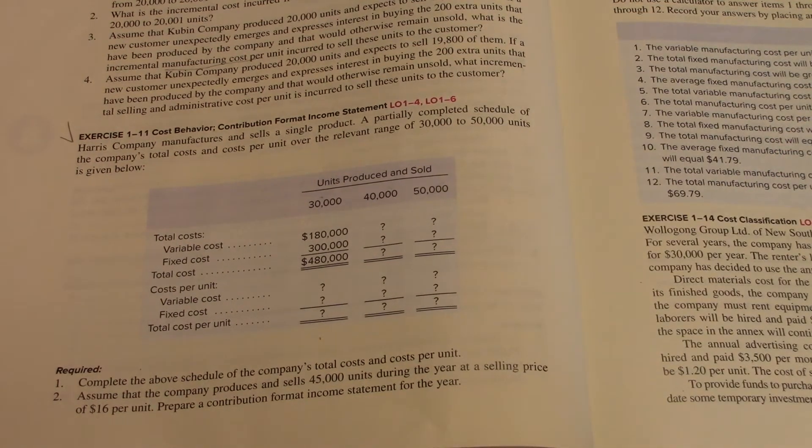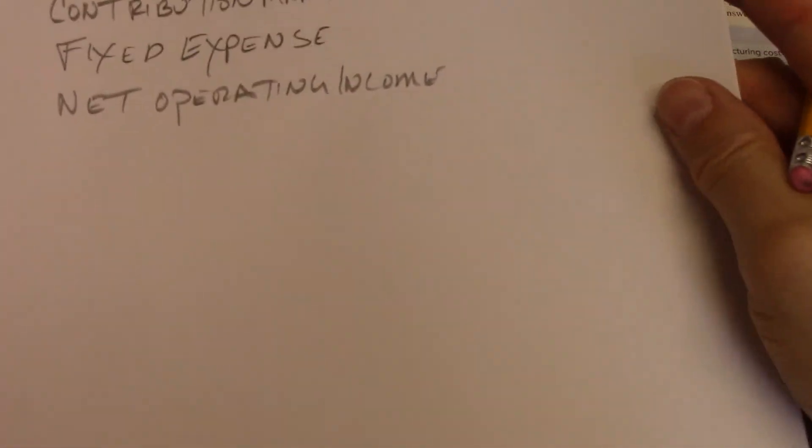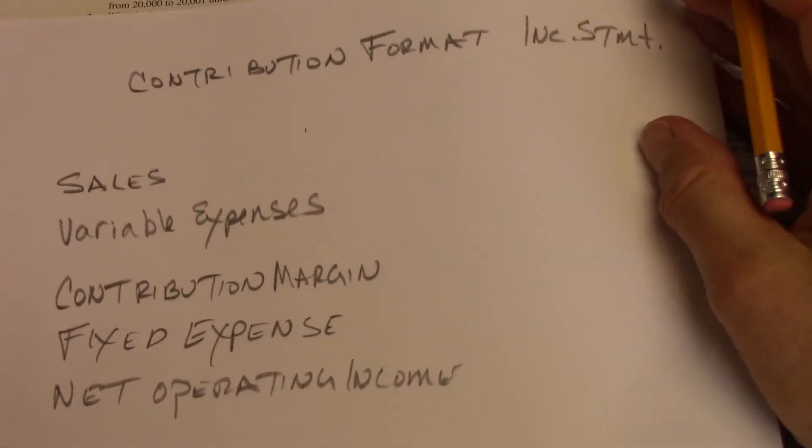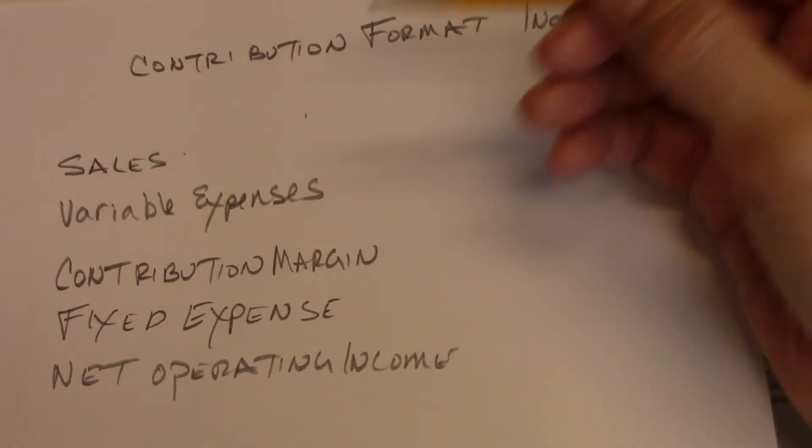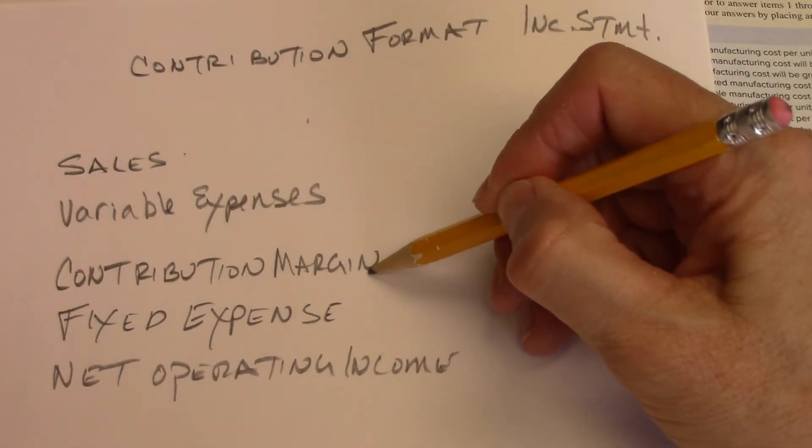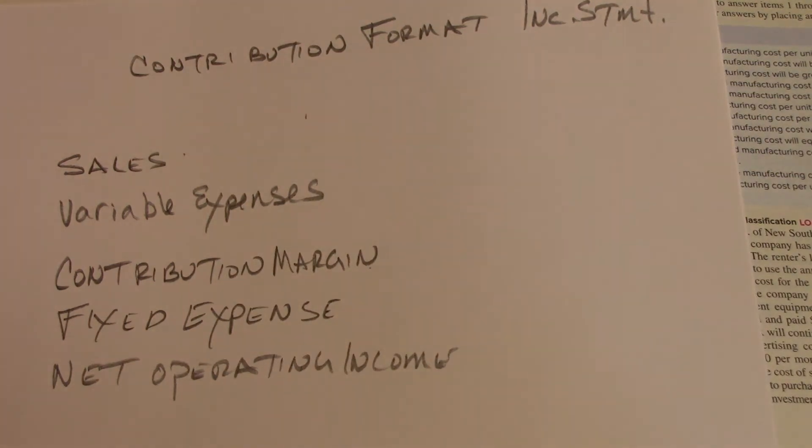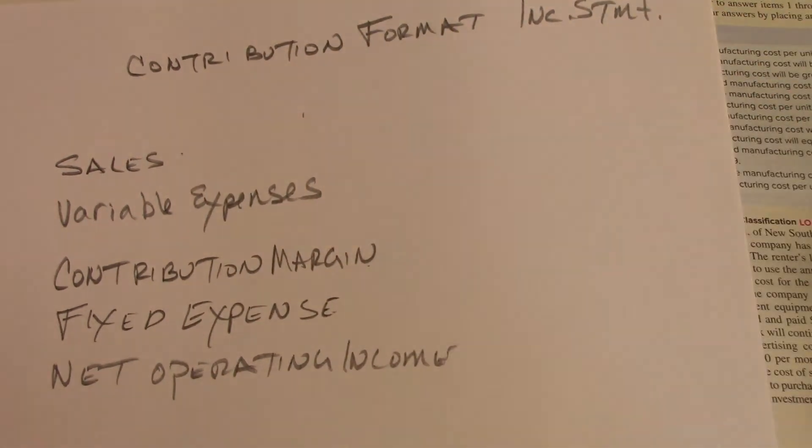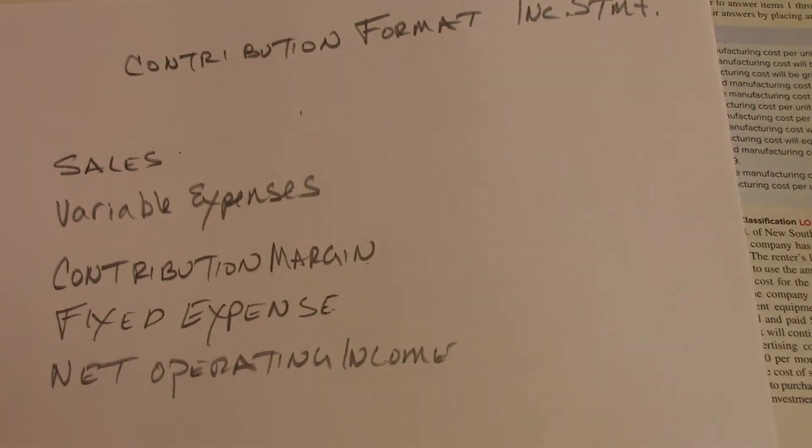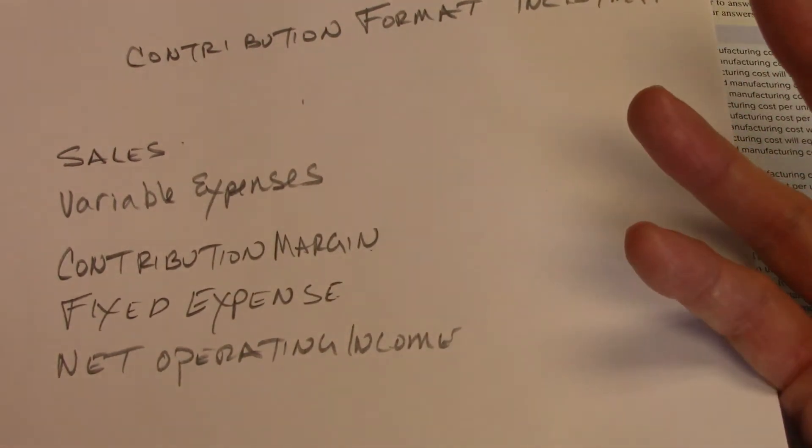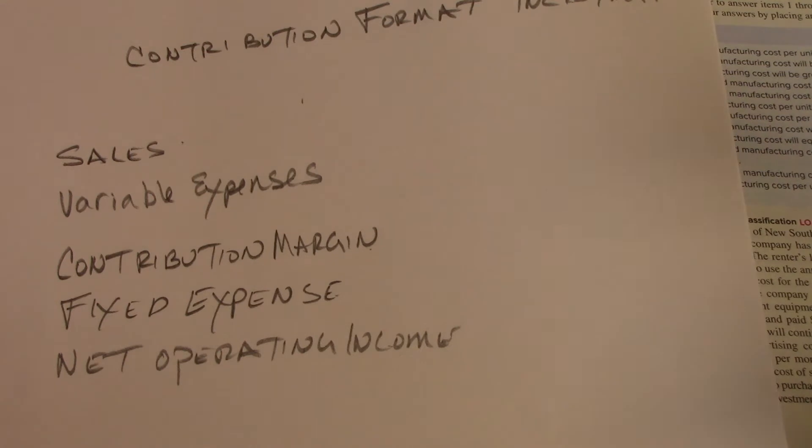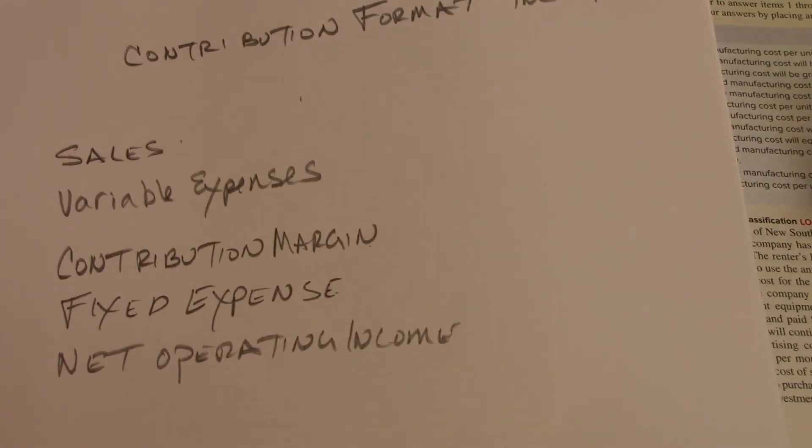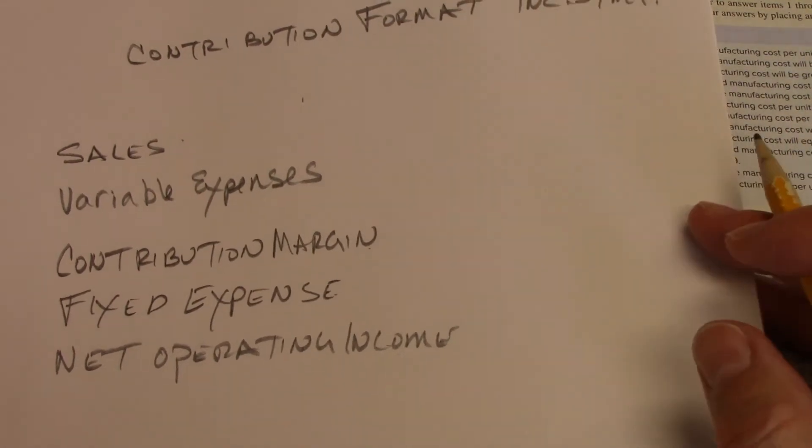So I went ahead and wrote out a contribution format income statement. You take your sales minus your variable expenses and it gives you your contribution margin. Then you subtract your fixed expenses and it gives you net operating income. And these are all totals.